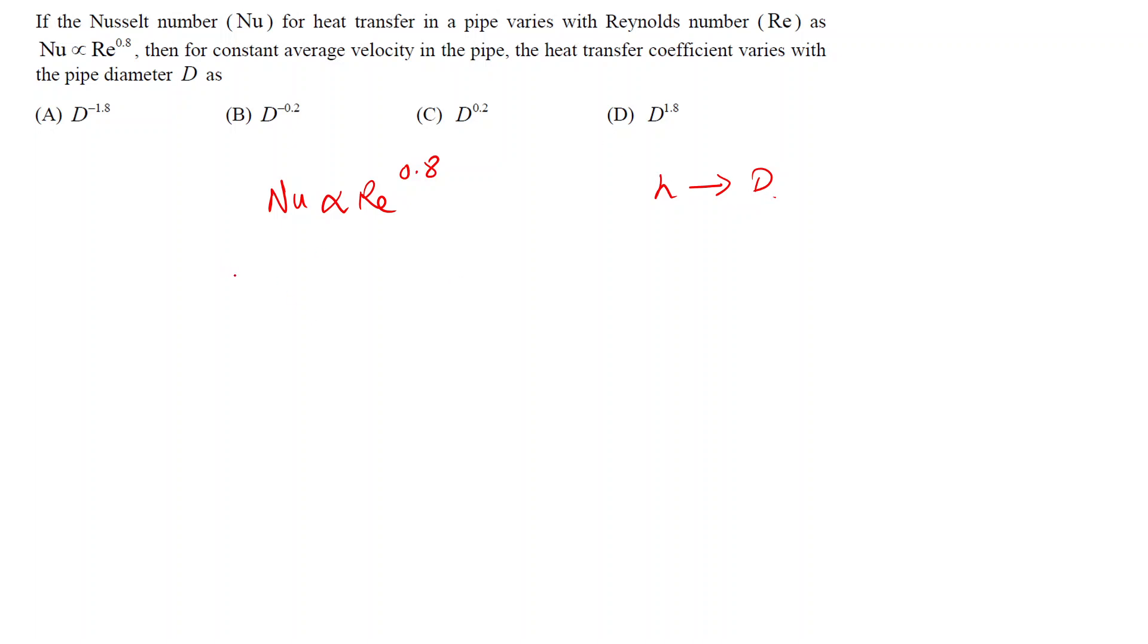We can define Nusselt number as H D upon K, where H is the heat transfer coefficient, D is the characteristic diameter, K is the thermal conductivity. We can write it as, let's consider beta as the proportionality constant.